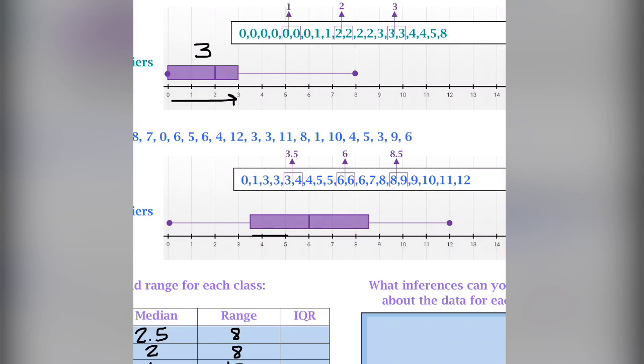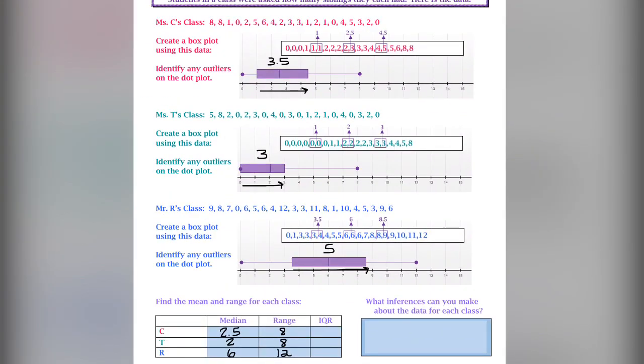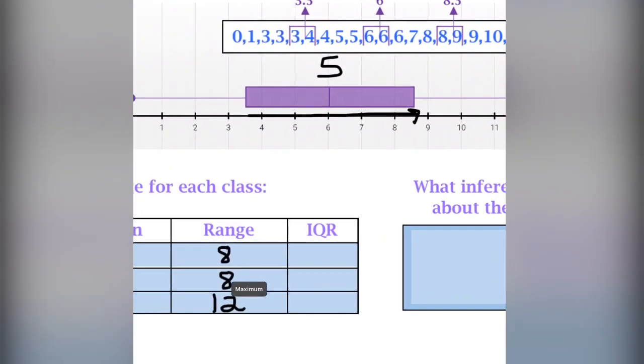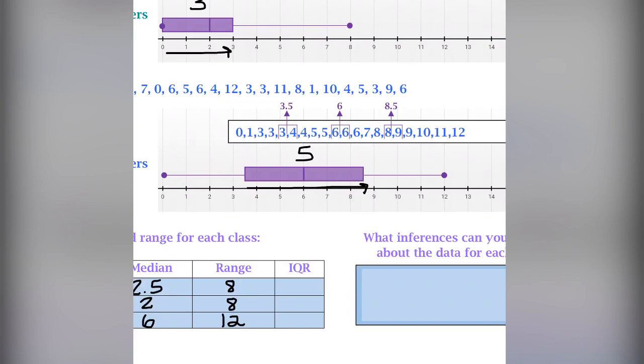From 0 to 3 is 3. And here, from 3.5 to 8.5, we get an IQR of 5. So we can fill that data in as well. We get 3.5, 3, and 5.